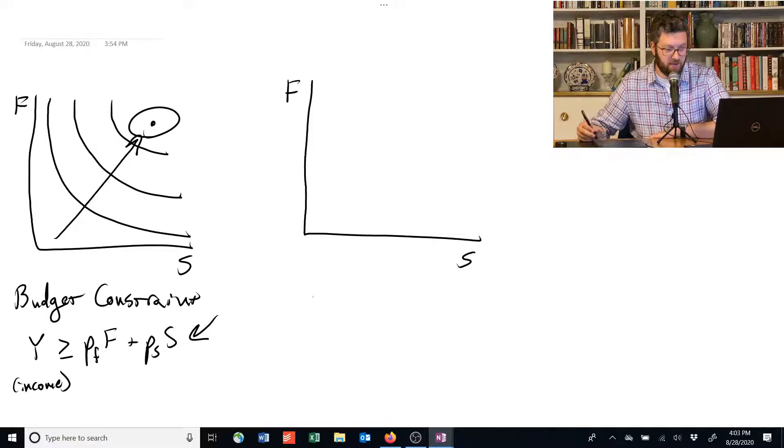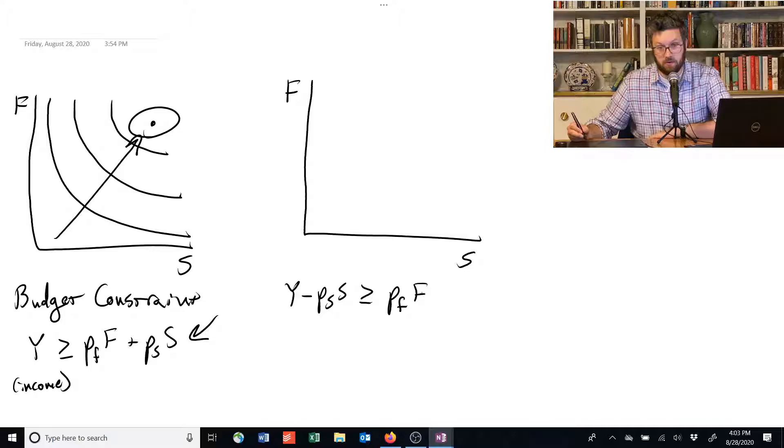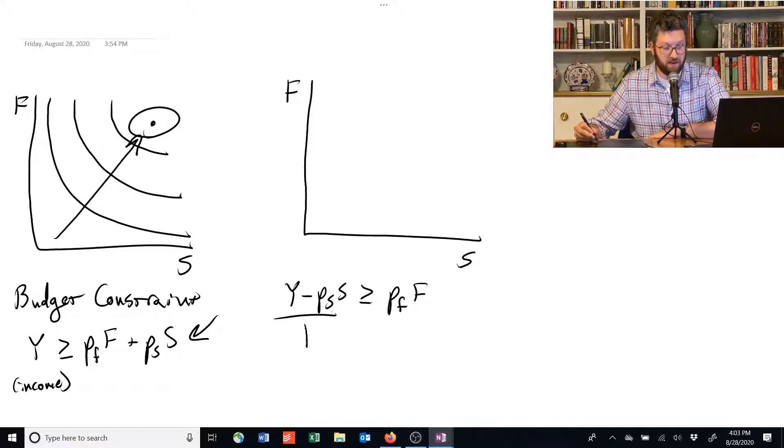So if we're going to do that, we can subtract PS times S from both sides. Step one, then we can divide everything by PF.